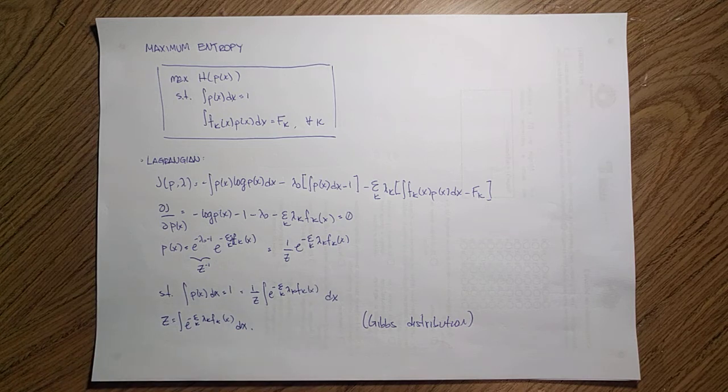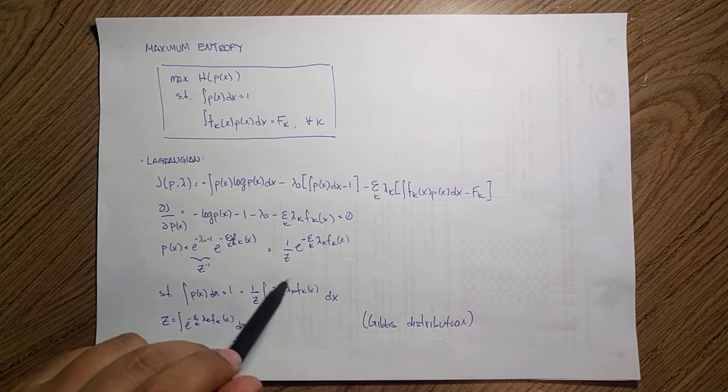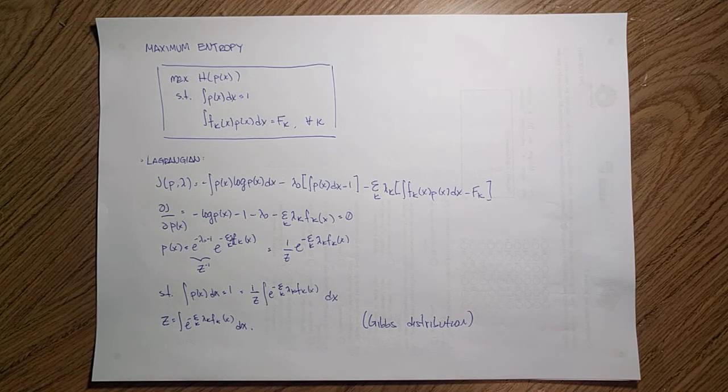Now, if you remember, I have my constraint that the integral of this should be one. So I need to do the integration of this part over here. I can solve for Z and we see that Z ends up as the partition function such that it needs to be the integral of this thing over here, so it integrates up to one.